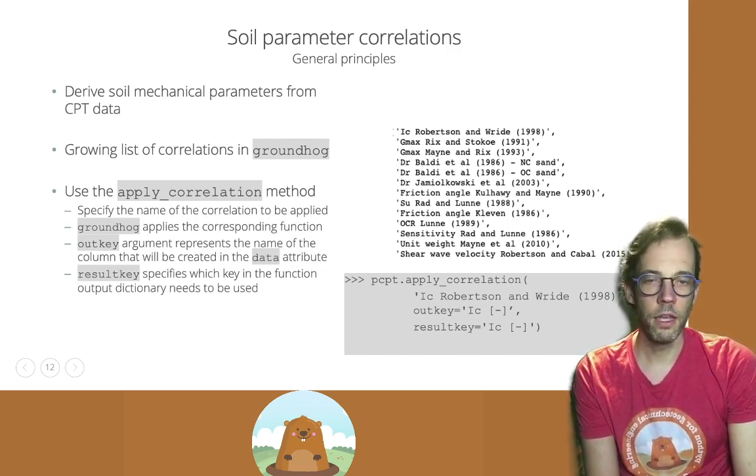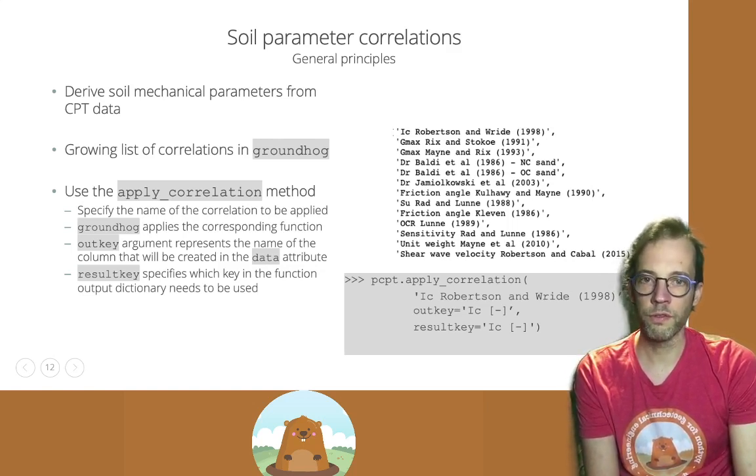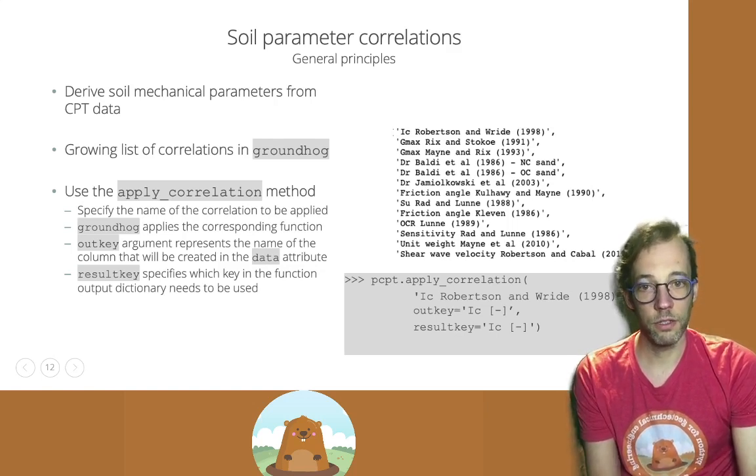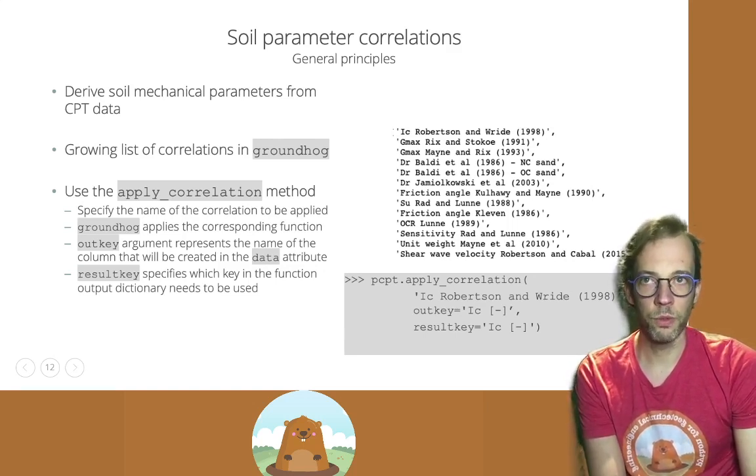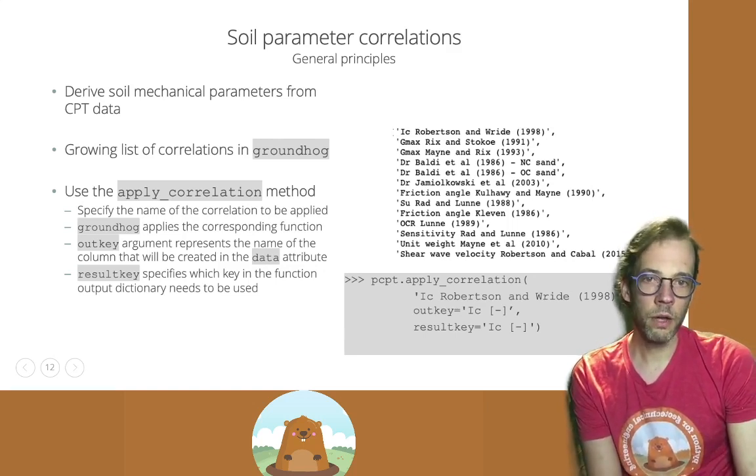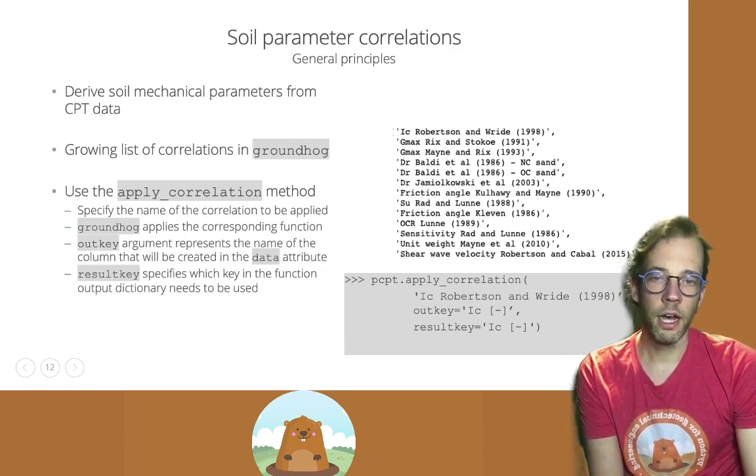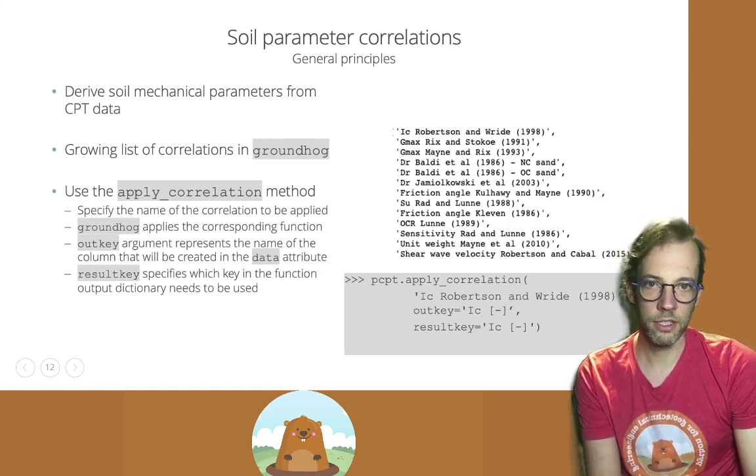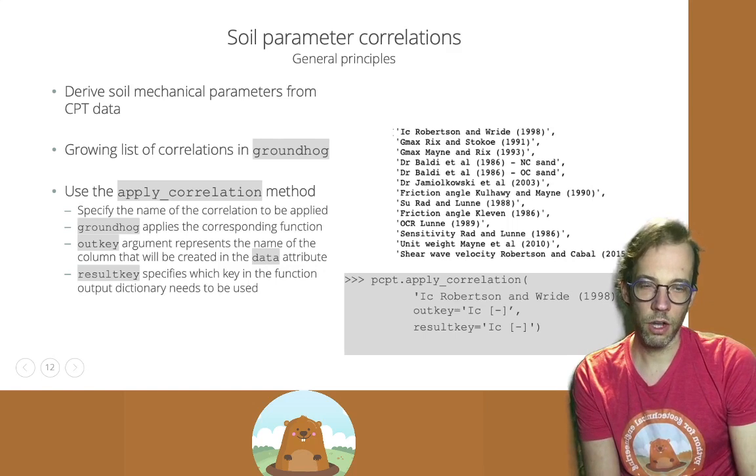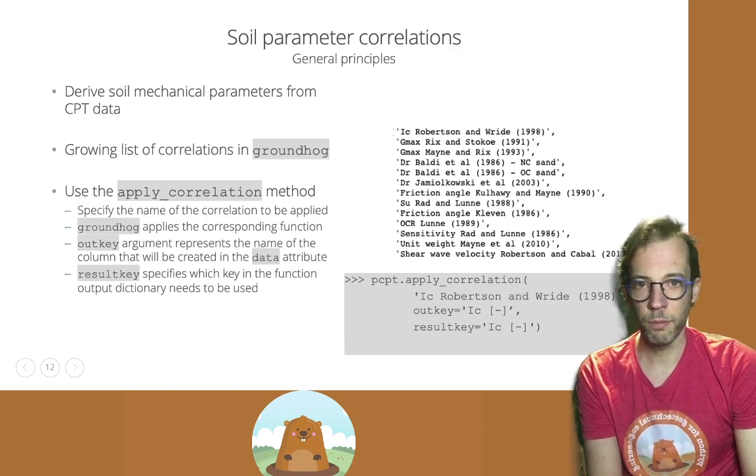We now come to a very important part of CPT processing and that is the derivation of soil mechanical parameters from CPT data. In the absence of laboratory testing data, this is often a very useful source of information. And when compared and processed together with laboratory testing data, it becomes an even more valuable resource. In groundhog, there's a growing list of correlation that has been made available.